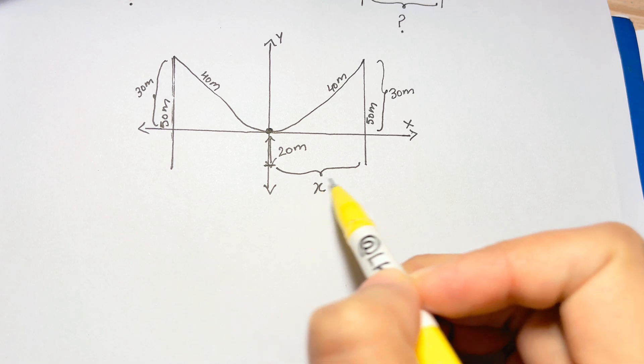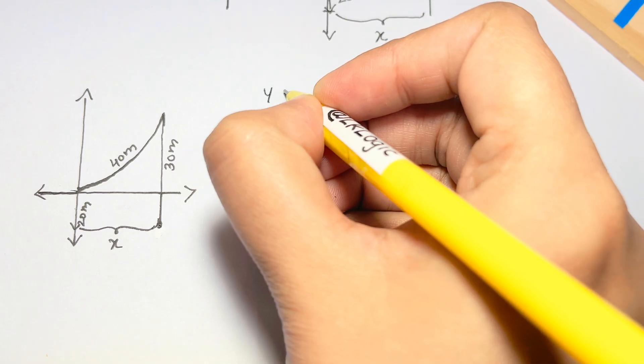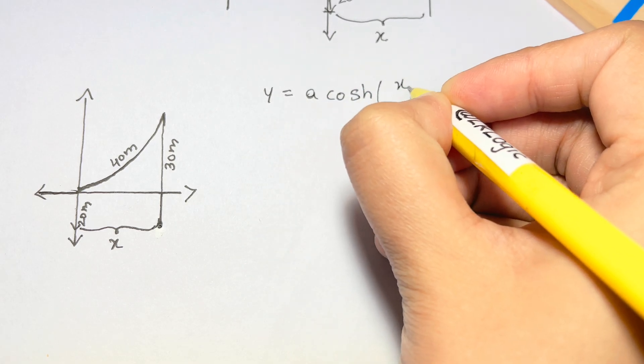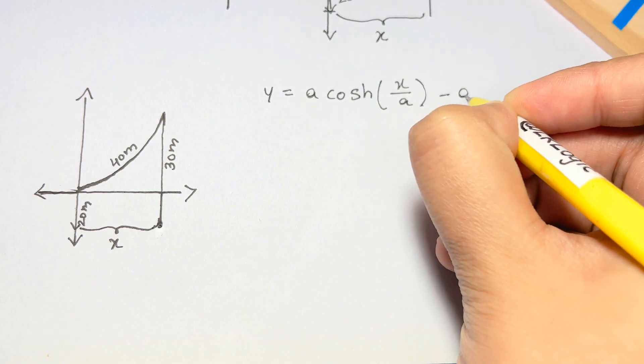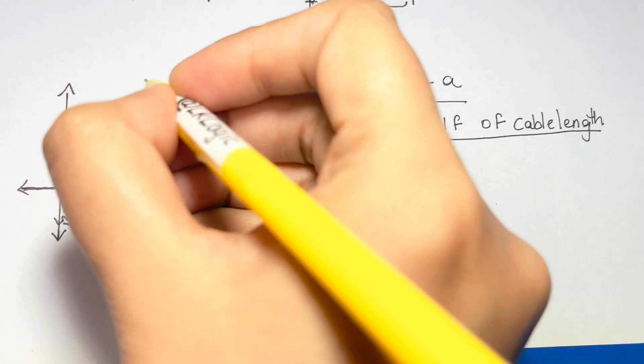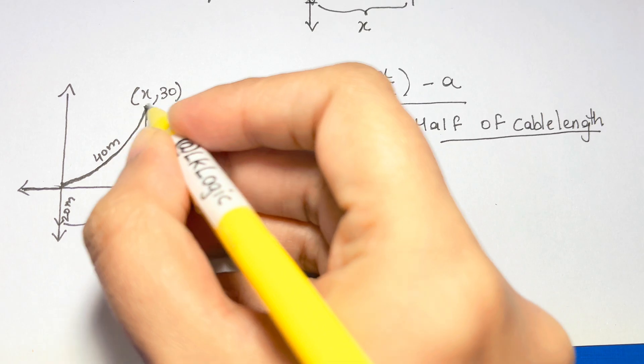The general catenary equation that's tangent to the ground or the x-axis takes the following form: y equals a cosh of the quantity x over a minus a. Furthermore, the top of the pole in this diagram will be at the coordinate x comma 30.